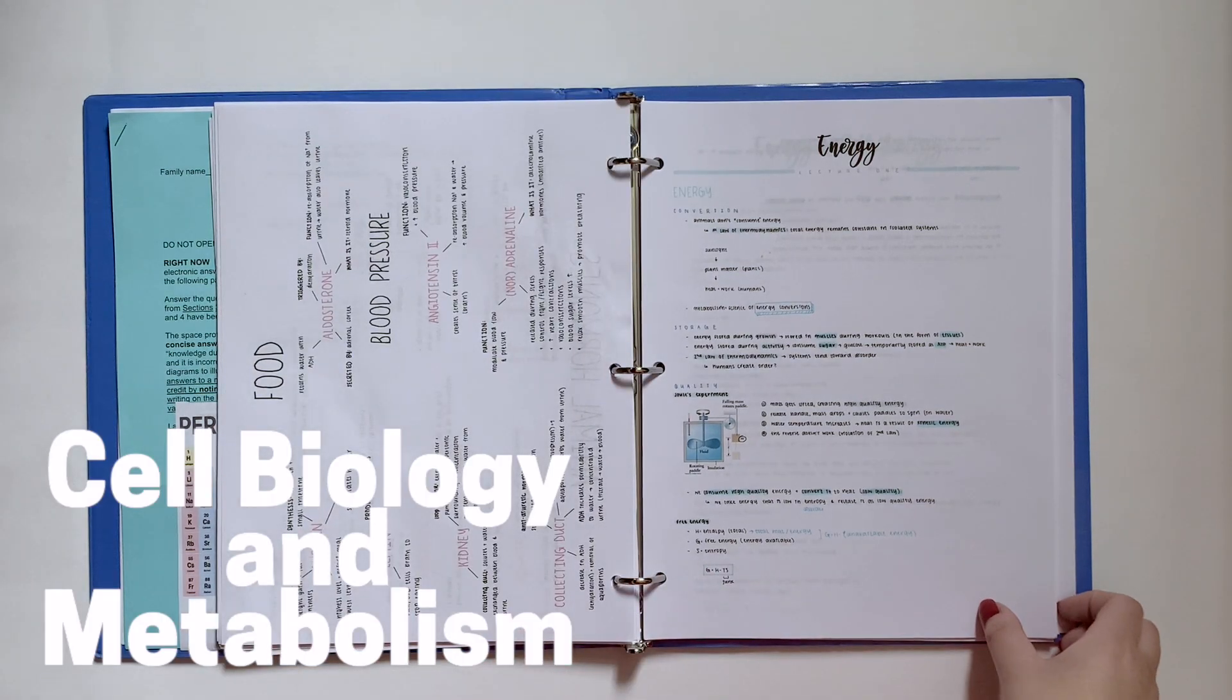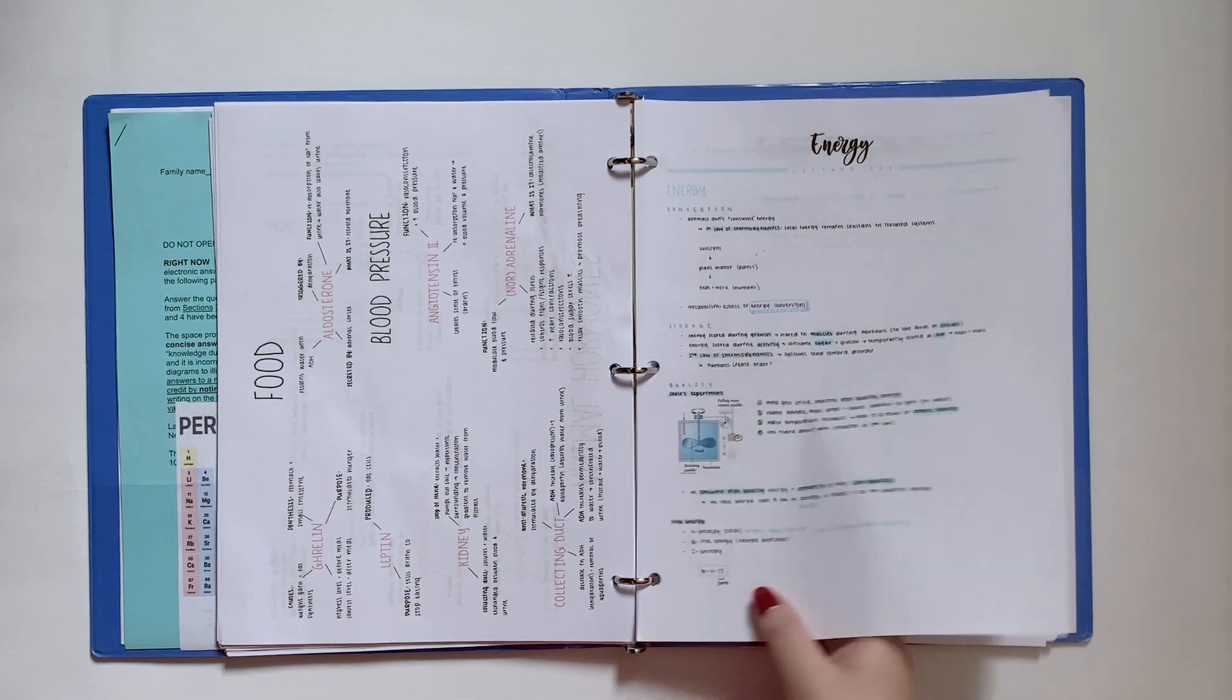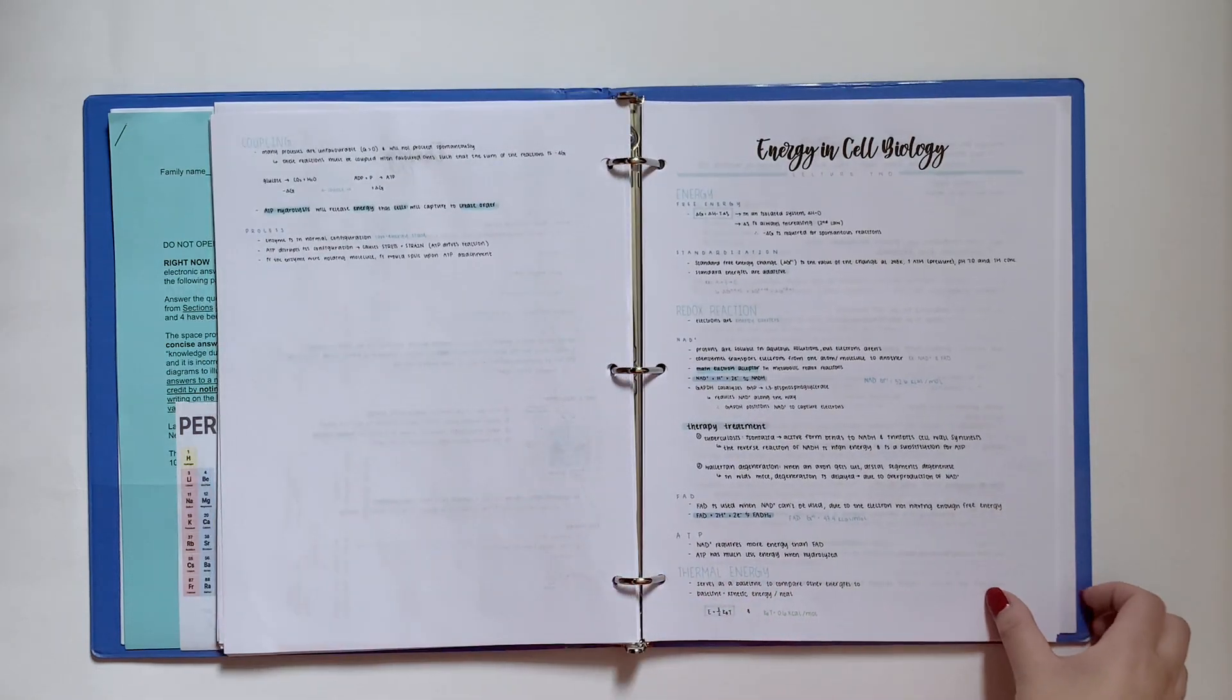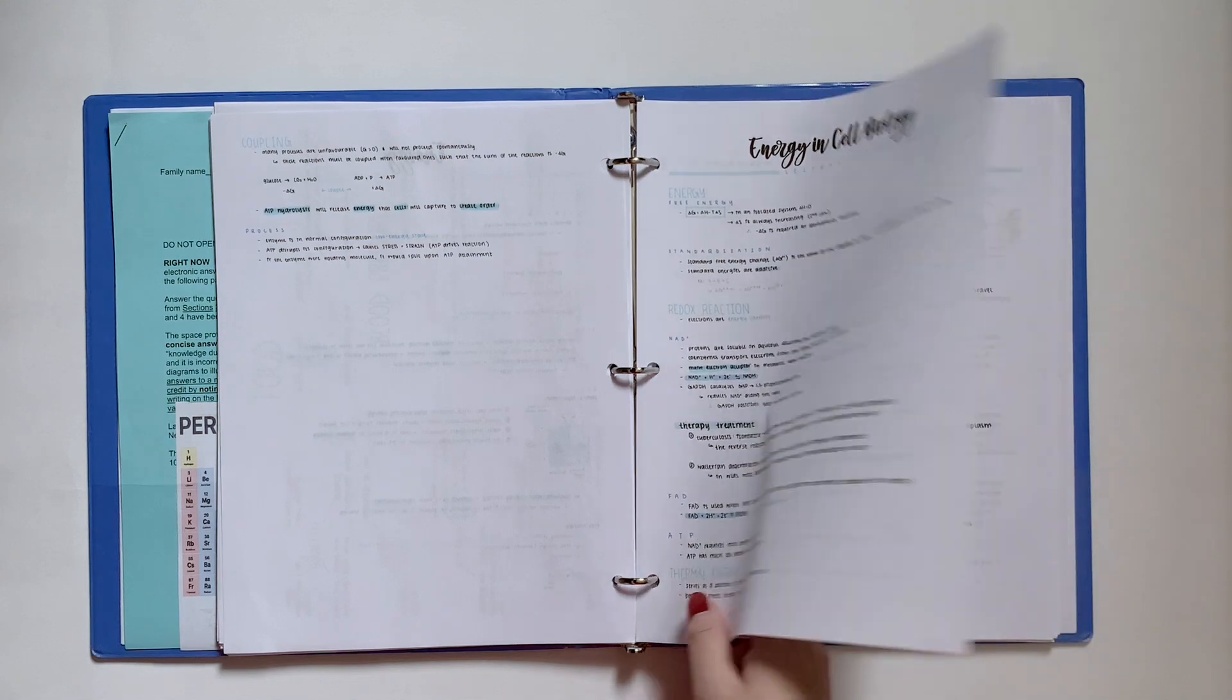Now we're moving on to cell biology and metabolism, one of the hardest classes I have taken so far. I know I should probably distinguish between the classes with different colors, but I didn't.